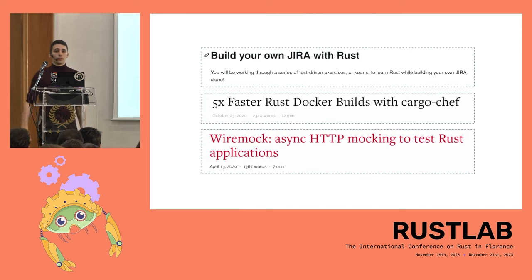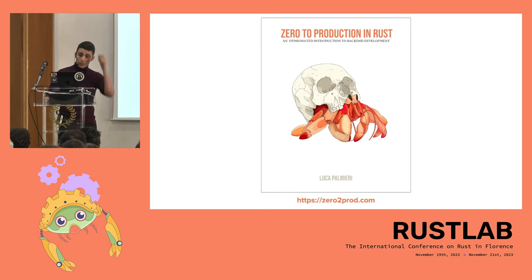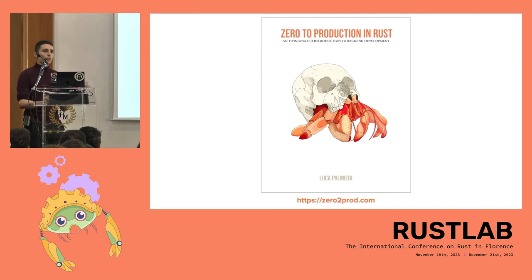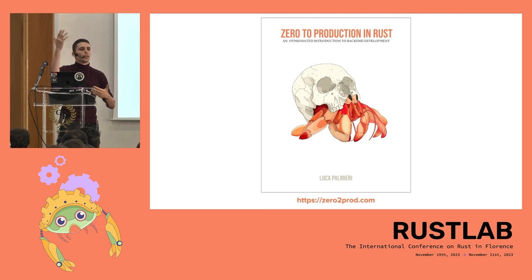I have been in the Rust community for roughly five or six years. I've built trainings, libraries, tools — a little bit of everything. But I'm probably best known for being the author of Zero to Production in Rust, a book which teaches you how to do backend development from scratch, taking you from basic familiarity with Rust all the way to building functional applications.